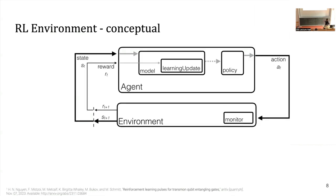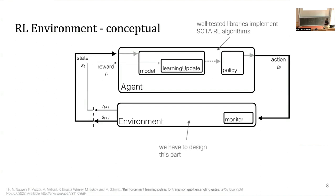Let's take a deeper dive into the environment itself. The policy inside the agent can be thought of as a neural network — a function approximator — that takes a state and outputs an action. We don't need to program these algorithms ourselves; there are well-tested state-of-the-art RL libraries. The real job is writing the environment: you put your simulator there, the agent interacts with it, and if you need memory, that goes inside the environment too. The agent is usually not touched.